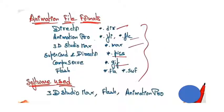Animation file formats: we use formats like FLI and FLC for Animation Pro, MAX for 3D Studio Max, PIX for SuperCard and Director, GIF for CompuServe, and FLA and SWF for Flash. These are the animation file formats we use in 3D Studio Max, Flash, and Animation Pro.